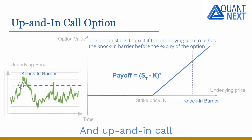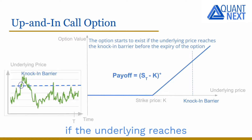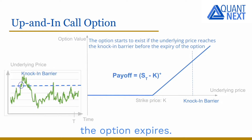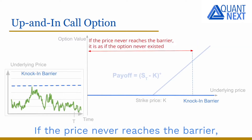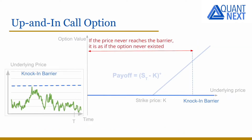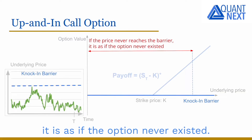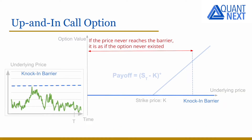An up and in call will start to exist if the underlying reaches the barrier before the option expires. If the price never reaches the barrier, it is as if the option never existed.